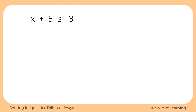Let's look at how that works when we're actually solving an inequality. Here we have x plus 5 is less than or equal to 8. If we want to write this inequality the other way, we can flip it so that 8 is on the left-hand side: 8 is greater than or equal to x plus 5. Notice that we did flip the inequality symbol around as well. When we solve these inequalities, our solution should still represent the same values of x, and we'll look at it on a number line to confirm.